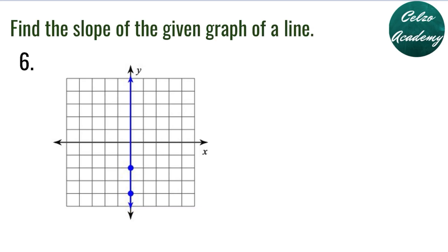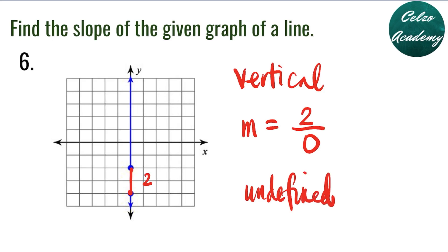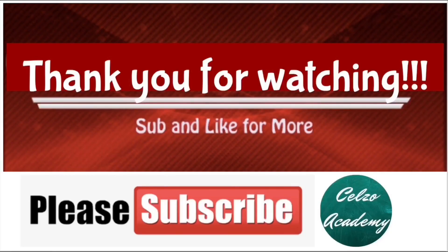Question number 6: find the slope of the given graph. Question number 6 is a vertical line. From the lower point, the graph went up 2 units, so rise is 2. It didn't go left or right, so run is 0. And 2 divided by 0 is undefined. Remember that vertical lines always have no slope or undefined slope. Thank you for watching and please consider subscribing to my channel at CELSO Academy.